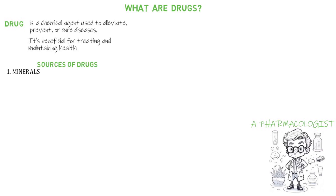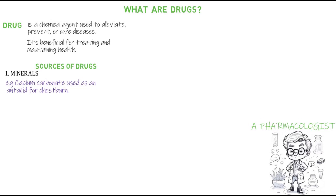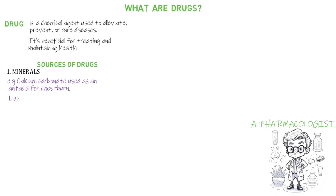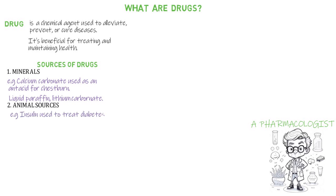Calcium carbonate is an example of a drug obtained from minerals and is used as an antacid to relieve chest and stomach discomfort. Other drugs obtained from minerals include liquid paraffin and lithium carbonate. From animal sources, insulin — used to treat diabetes — was obtained from the pancreas of pigs and cows.